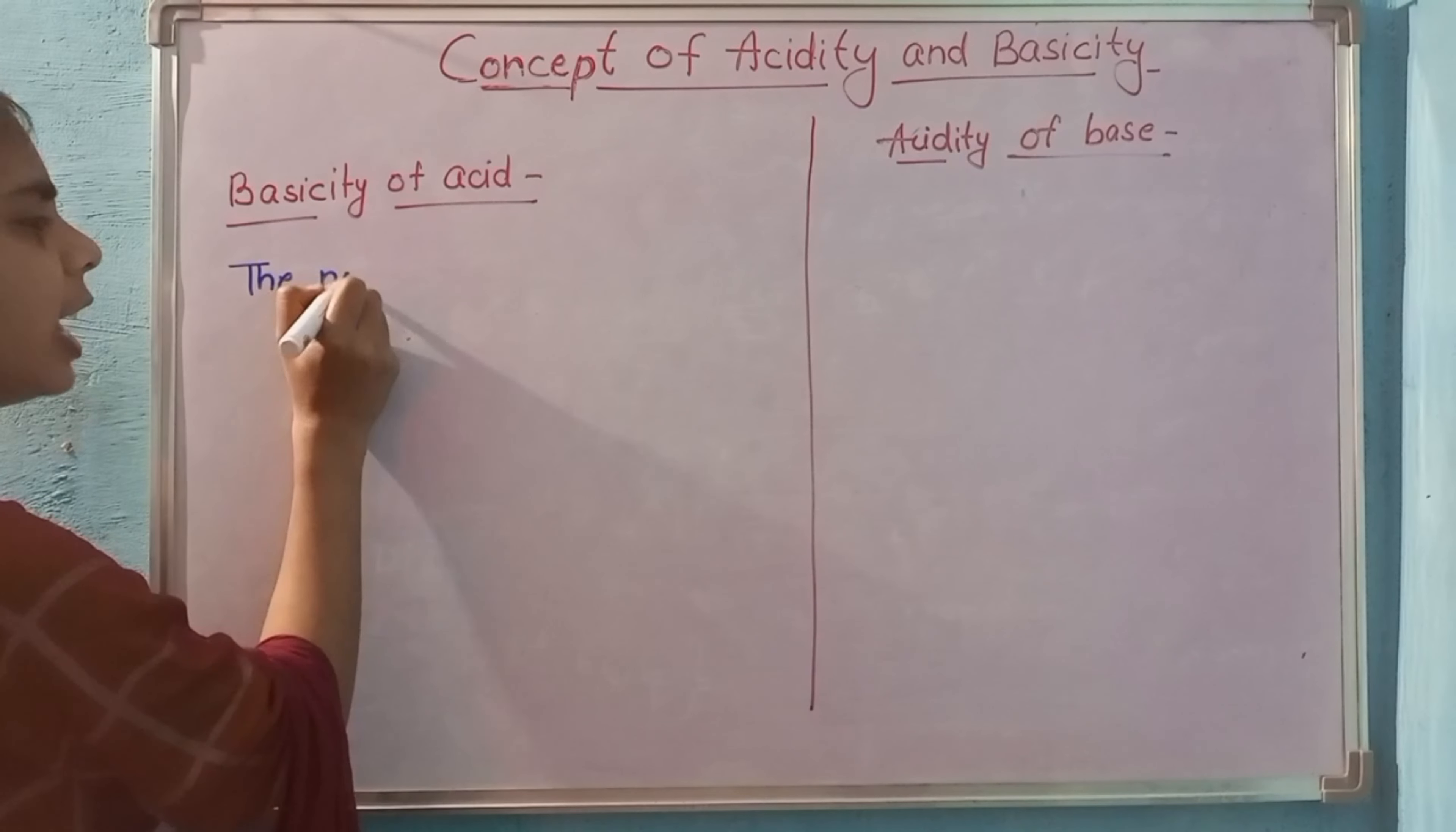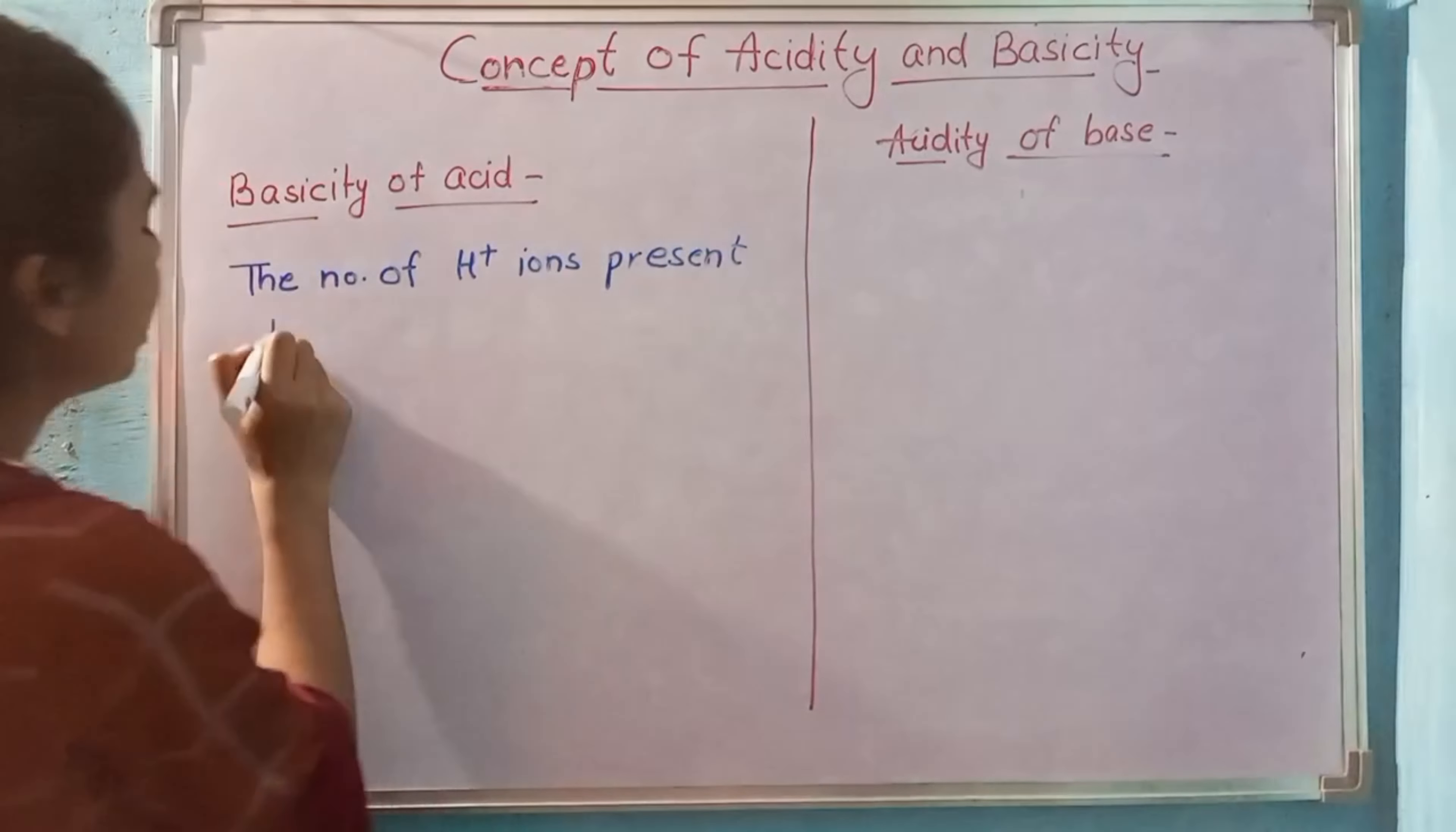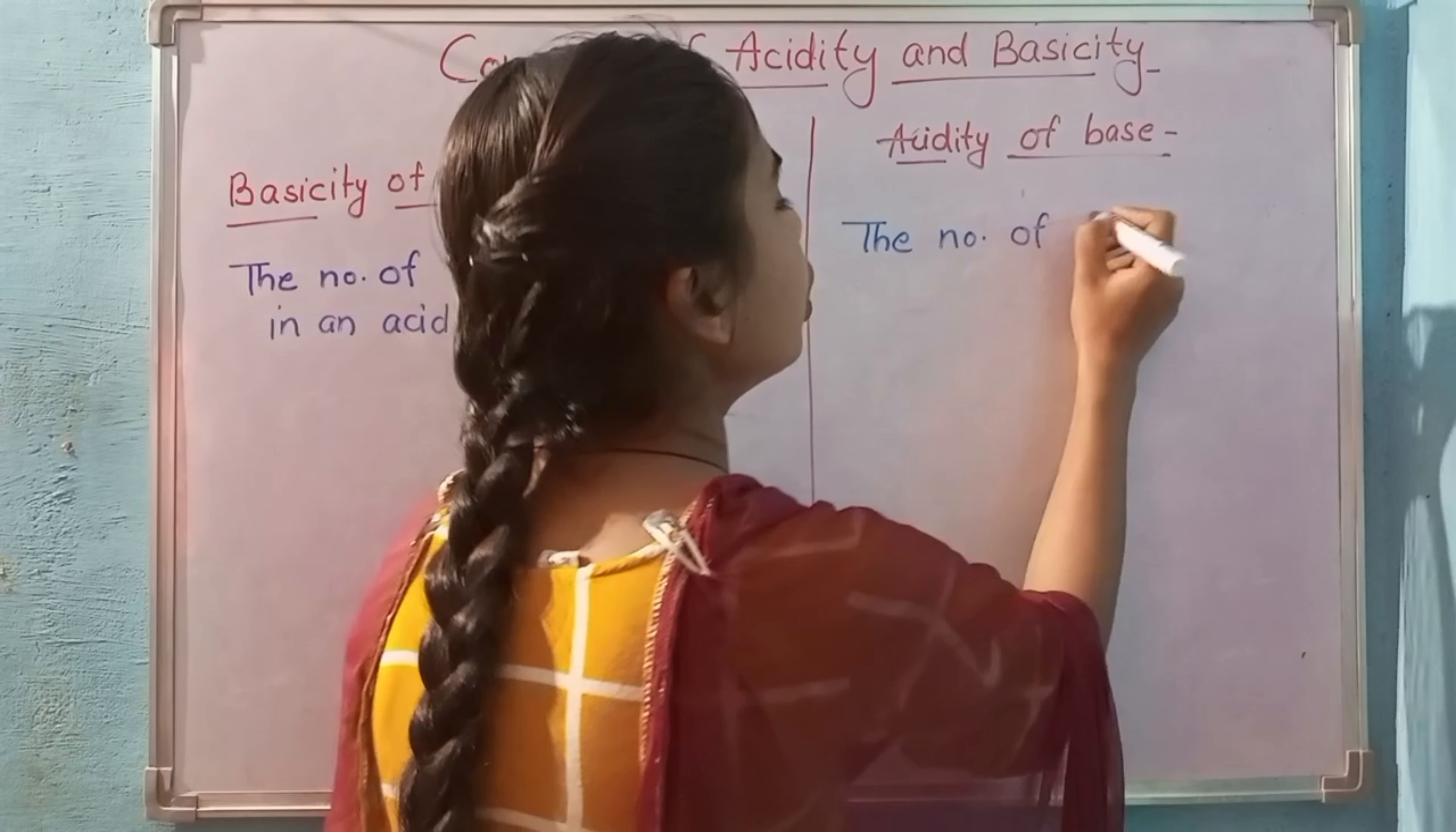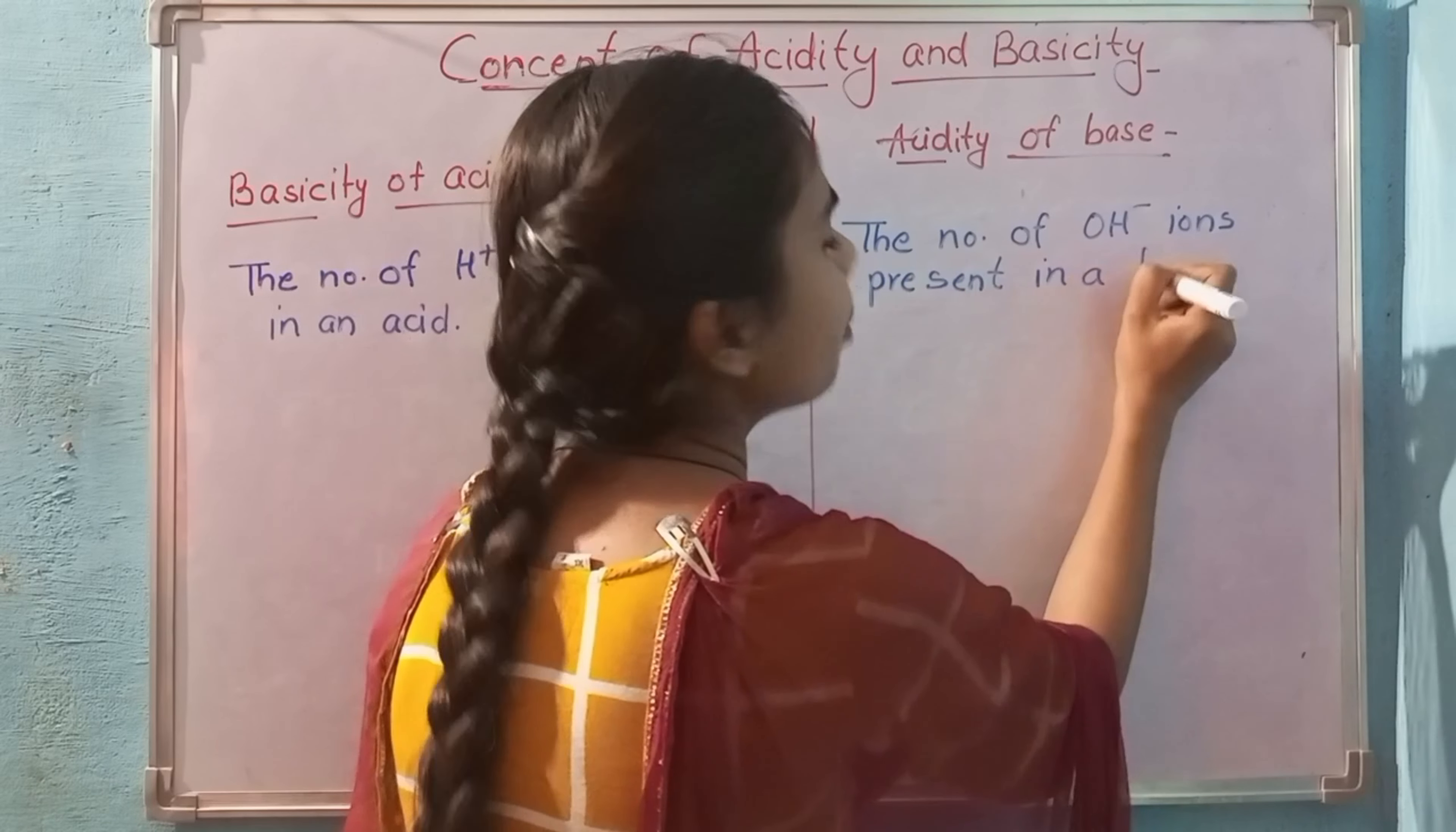If we talk about basicity, so what is basicity? Basicity is the number of H plus ions present in an acid. Similarly, acidity, what is the acidity? It is the number of OH minus ions present in a base. So now we can understand that the number of ions which are present determine the acidity or basicity.